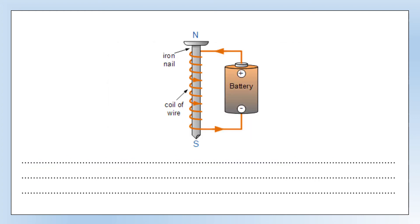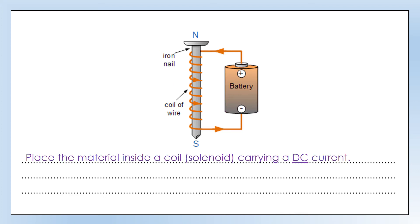A second way to magnetize a material is using a coil with a DC current flowing through it. A DC current is a constant value the whole time — as shown on a current versus time graph, it's a flat line. We'd need a reasonably large current because that current produces a magnetic field, which is what causes the material to magnetize.